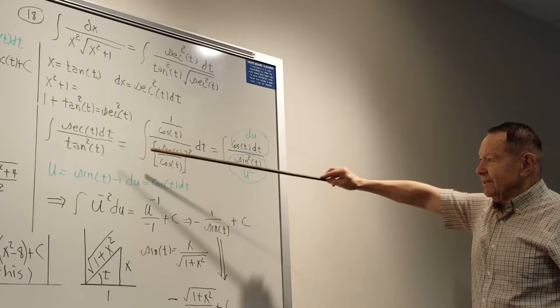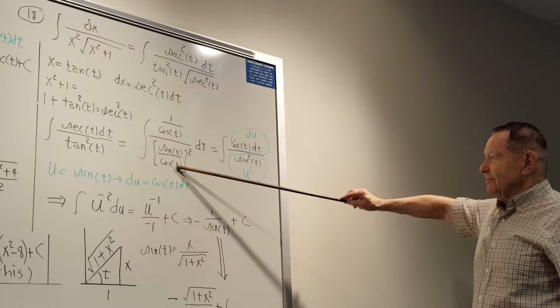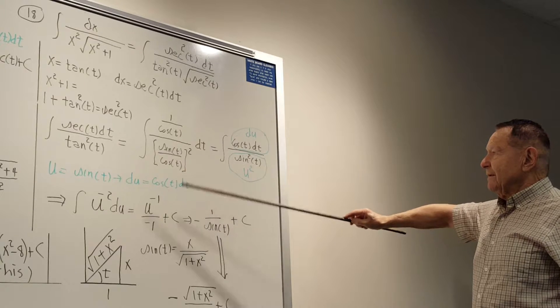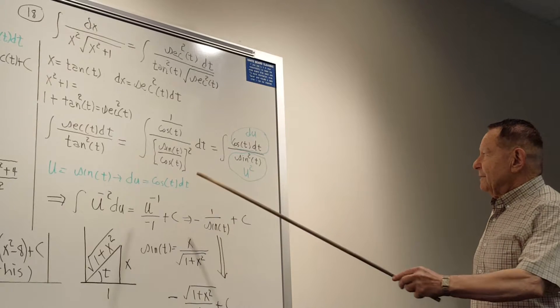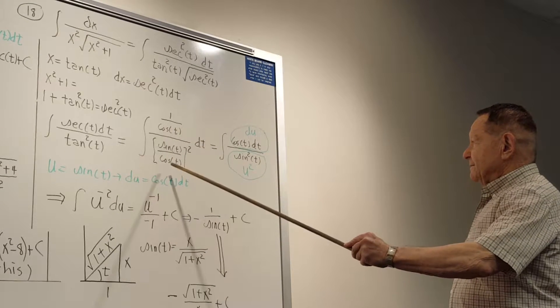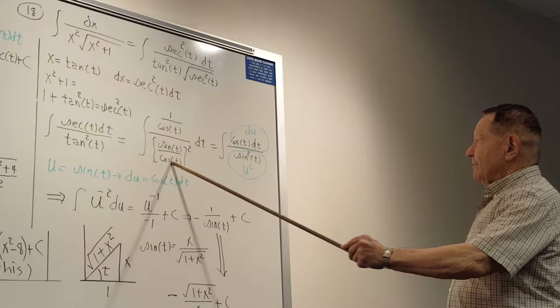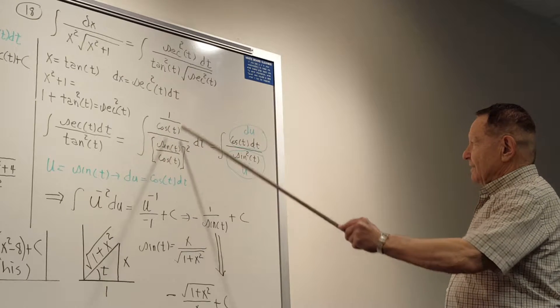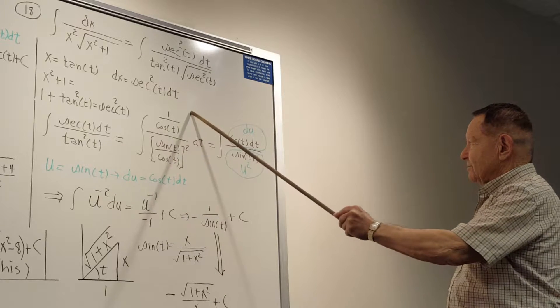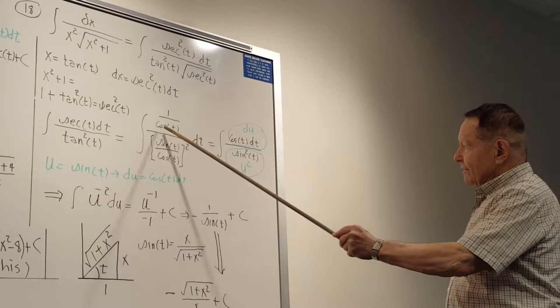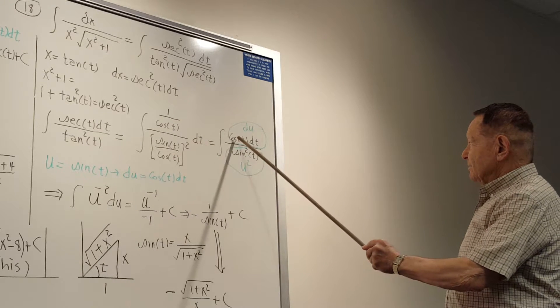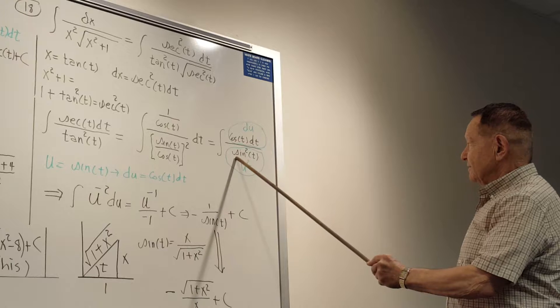So secant is one over cosine and tangent is sine over cosine. So then you can invert and multiply and you're going to have one over cosine times cosine squared over sine squared. So this cosine will cancel one of these, so you'll have cosine over sine squared.